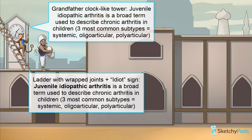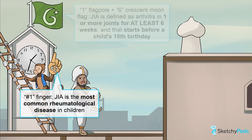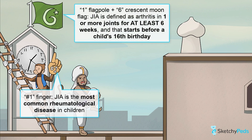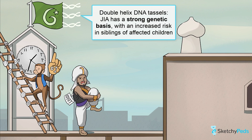JIA is really just a broad term used to describe chronic arthritis in children, represented here by the idiot sign for idiopathic and the grandfather clock-like tower for its chronic nature. It is the most common rheumatologic disease in children, defined as arthritis in one or more joints for at least six weeks, starting before a child's 16th birthday. The flagpole looks like a 1, the crescent on the flag looks like a 6, and together they look like 16. The double helix tassels on the flag depict the strong genetic basis for JIA, with a high concordance rate among identical twins and an increased risk in siblings of affected children.